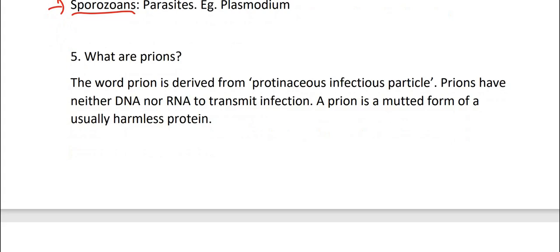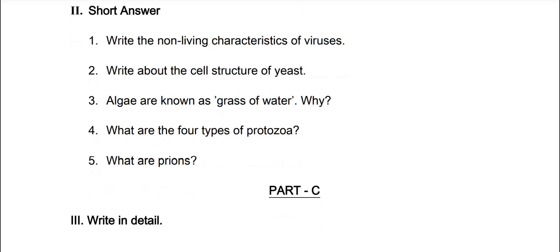Next, fifth one, water prions. The word prions is derived from proteinaceous infectious particle. Prions have neither DNA nor RNA to transmit infection. A prions is muttered form of a usually harmless protein.